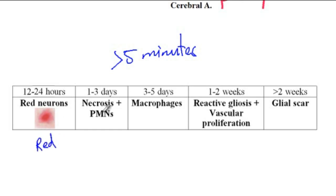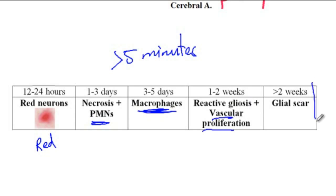In the next one to three days, there would be necrosis and neutrophils accumulating at the site. Between three to five days, macrophages will be present. Between one to two weeks, there would be reactive gliosis where glial cells respond to the damage, along with vascular proliferation. Finally, after two weeks, a glial scar will be formed.